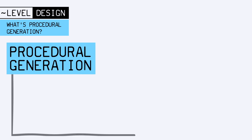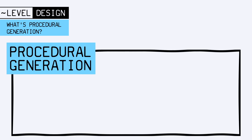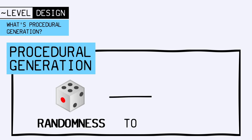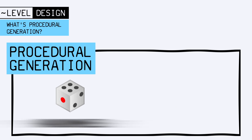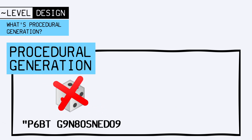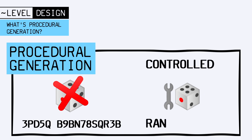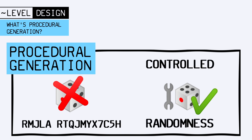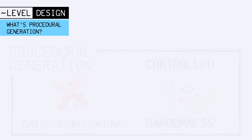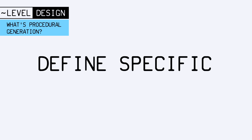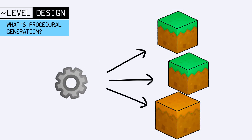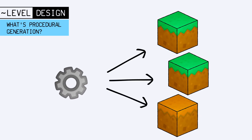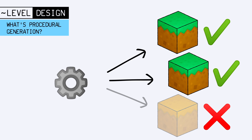In short, procedural generation is about using randomness to automate some parts of your process. But not just pure randomness — controlled randomness. More precisely, you'll want to define specific rules that constrain your generator to a subset of possibilities and enforce it only produces viable results.